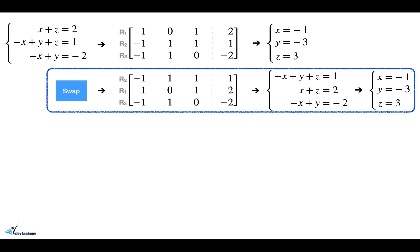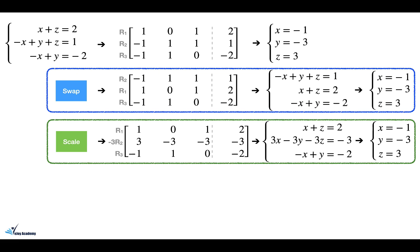The first operation was swapping. In this example, the first row and second row of the original matrix are interchanged, and the resulting system of equations has the same answer as the original. That's why the new matrix obtained by applying the swap operation and the original matrix are called row equivalent matrices. The second operation was scaling — in this example the second row is multiplied by minus 3 — and the new system of equations has the same answer because the only thing we did was multiply both sides of the second equation by minus 3.